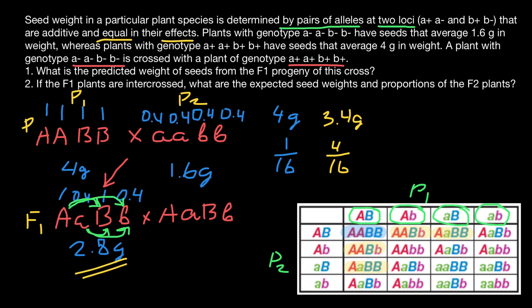Genotypes with two dominant alleles and two recessive alleles appear six times out of 16. Two dominant alleles contribute 2 grams and two recessive alleles contribute 0.4 + 0.4 = 0.8 grams, giving a seed weight of 2.8 grams. The frequency is 6/16.